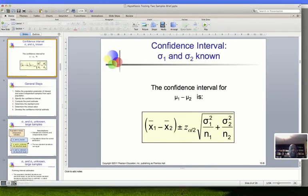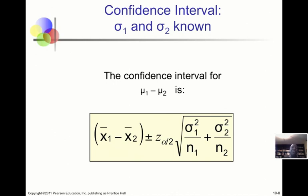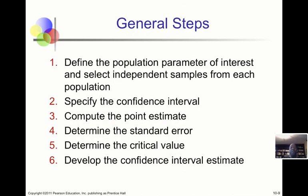The general steps for constructing a confidence interval are: define the parameter of interest (μ₁ minus μ₂); select independent samples from each population; specify the confidence level (95%, 90%, 98%); compute the point estimate x̄₁ minus x̄₂; determine the standard error using σ₁ and σ₂ if known; select the critical value based on the confidence level — for 95% use 1.96; then calculate the interval.